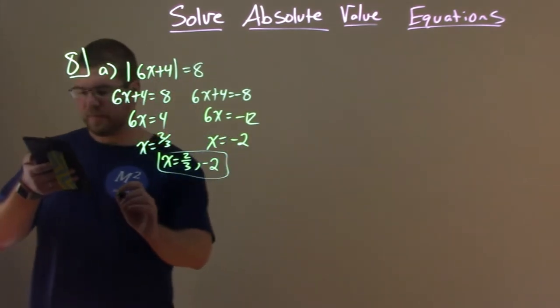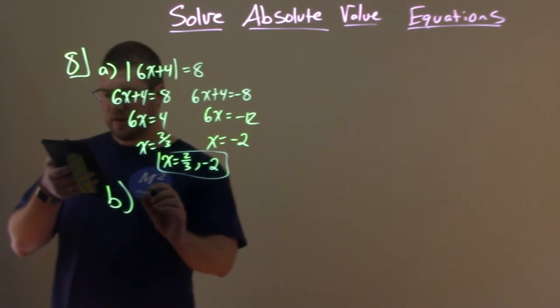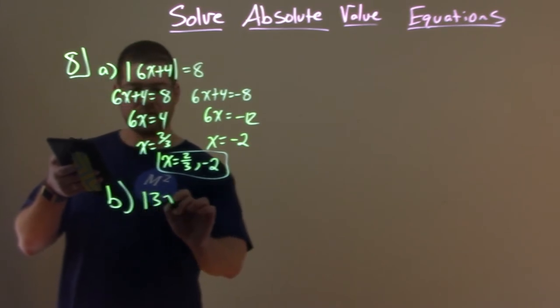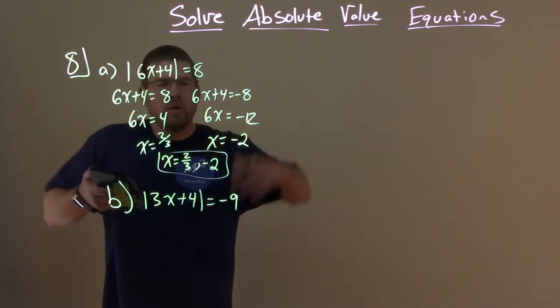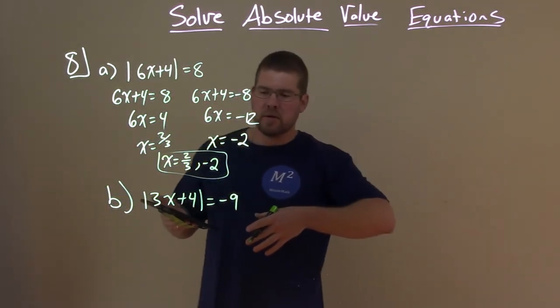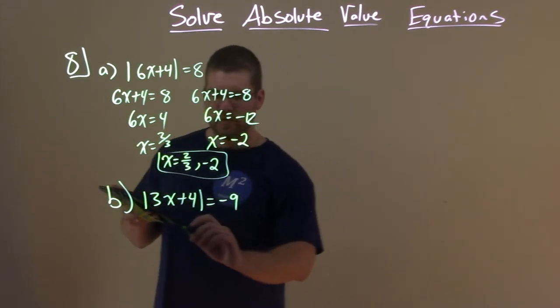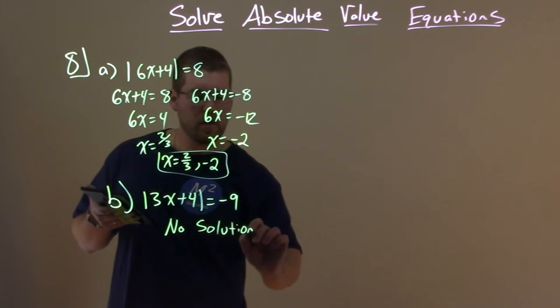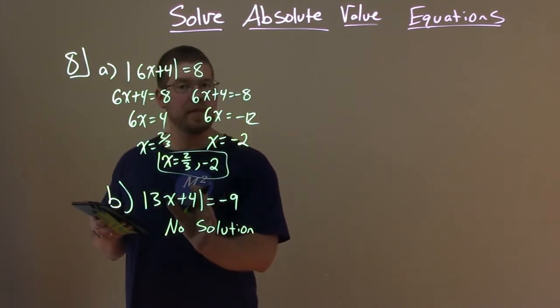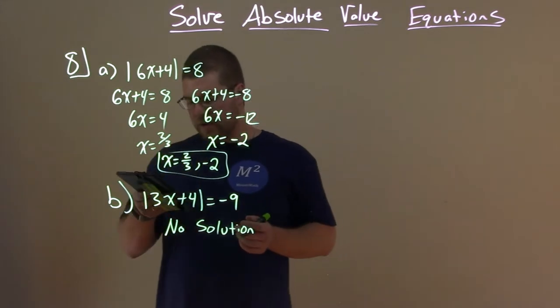Let's go with part B. What about B? So B here is the absolute value of 3x plus 4 equals negative 9. Well, let's go from our definition we talked about earlier. This is equal to a negative number means we have no solution. Why? Well, whatever's inside here, when we take the absolute value, it's impossible for that to be negative. So we have no solution here.